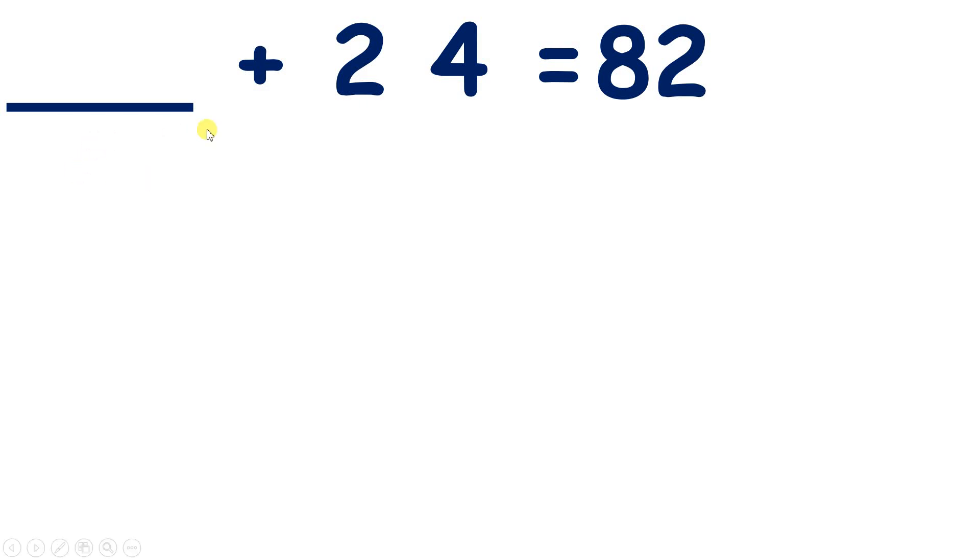Here we have something plus 24 equals 82. So how can we find the missing number? Well, with a number family triangle, the numbers at the bottom add to make the number at the top.